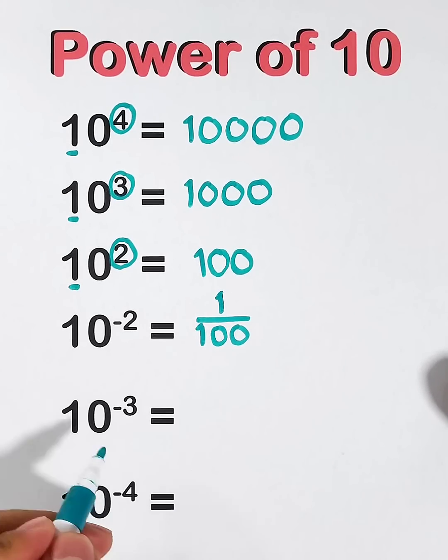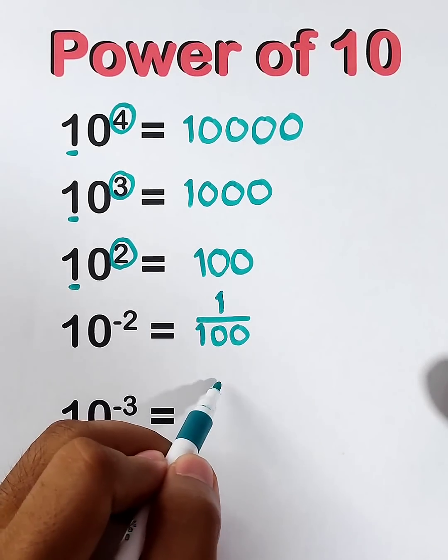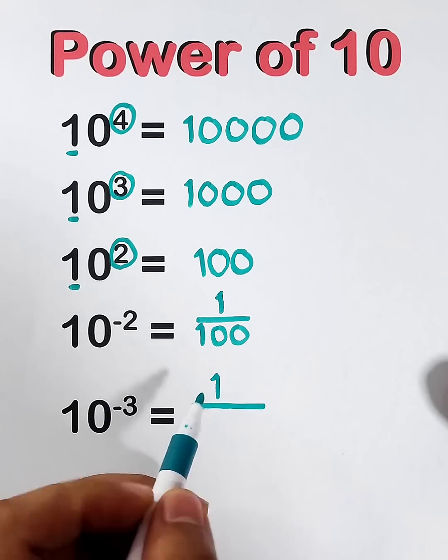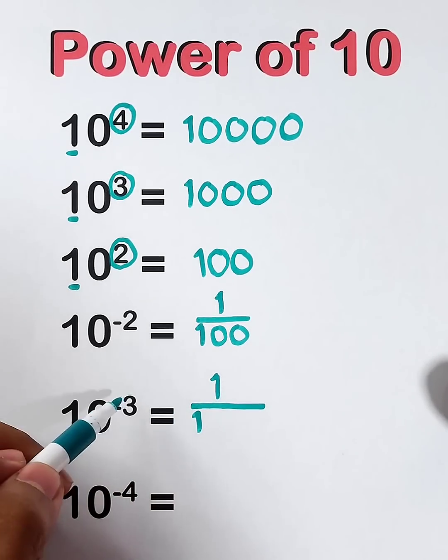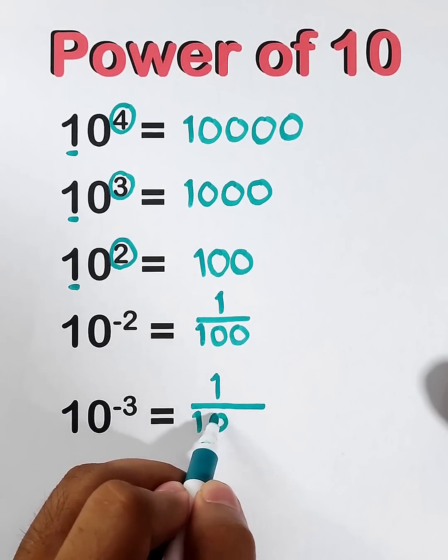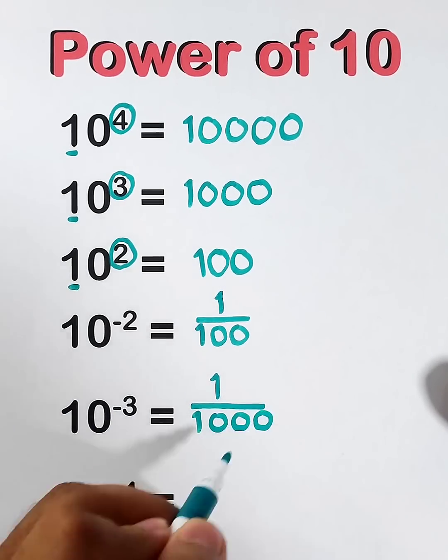Next, same pattern with 10 raised to the negative 3. Put 1 as your numerator, over 1, then copy or count the number of exponent. This is negative 3, so we will put 1, 2, and 3 zeros.